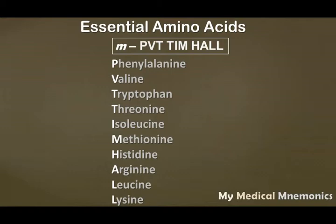Now, a caution: there is another amino acid, Tyrosine, which is non-essential and also starts with T. So one can easily get confused whether Tyrosine, Threonine, or Tryptophan is in the mnemonic. You have to remember that Tyrosine is non-essential, while Threonine and Tryptophan are essential. So in our mnemonic PVT TIM HALL, those two T's are for Threonine and Tryptophan.